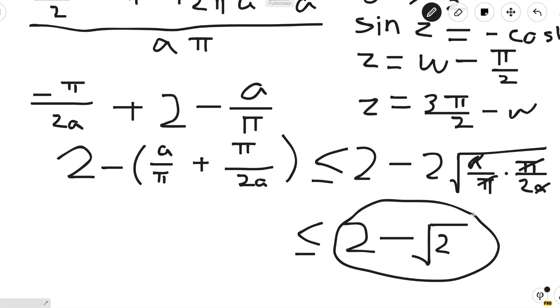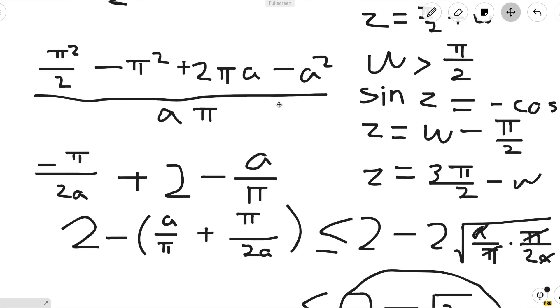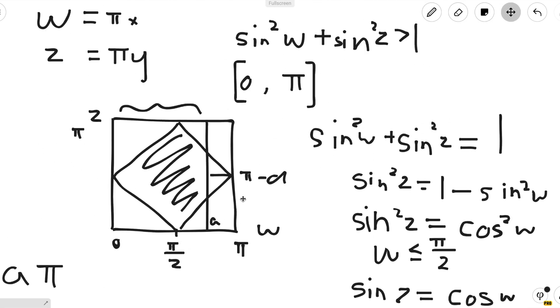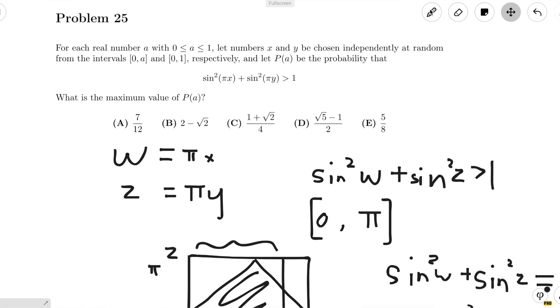Looking back at the answer choices, we see that 2 - √2 is indeed an answer. So we circle B and we're done with problem number 25.